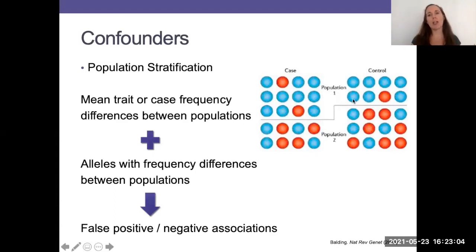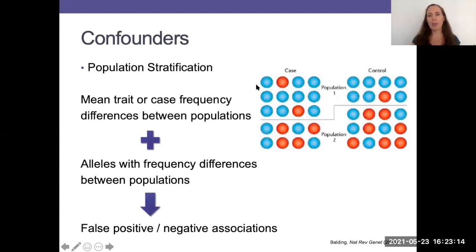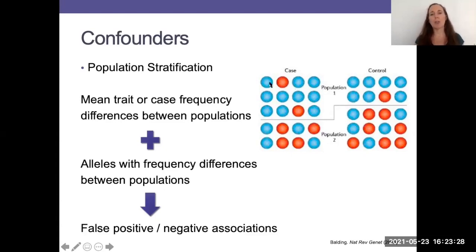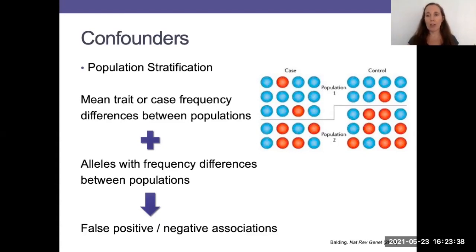It's easier to conceptualize this when you think about cases and controls. This little diagram helps unpack that. We've got two populations — population one on the top, population two on the bottom — with cases on the left hand side and controls on the right hand side. The blue circles indicate allele frequency. If you simply look at this, you see there's more blue on the cases, and you would then conclude the allele is associated with being a case.